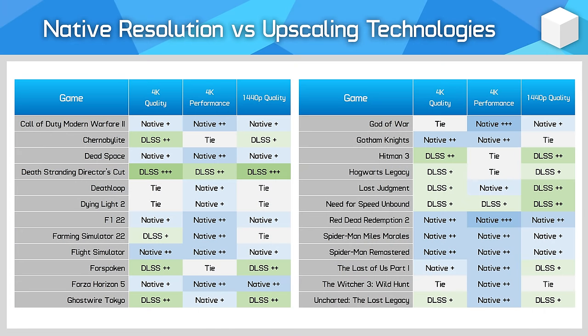Having now gamed using DLSS at 1080p extensively across 10 titles, my opinion hasn't changed much compared to when I first tried upscaling at this resolution. DLSS is far less effective at 1080p compared to 1440p or 4K — the DLSS quality mode used throughout this video is rendering the game at just 720p before upscaling to 1080p; that's not a lot of pixel data the algorithm has access to. When I tested DLSS in 26 titles at 4K and 1440p, at 4K quality mode I thought 10 games looked better using DLSS, 4 were tied, and 10 were better using native. At 1440p quality mode, 10 games were better using DLSS, 5 were tied, and 9 were better using native — so only about 36% of the time was native rendering better.